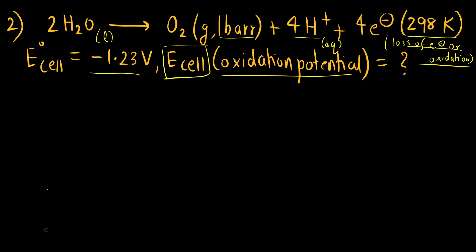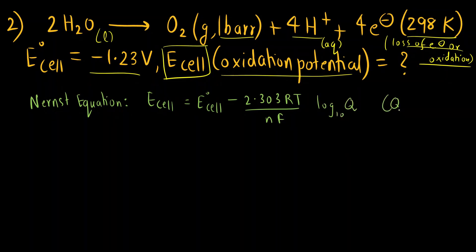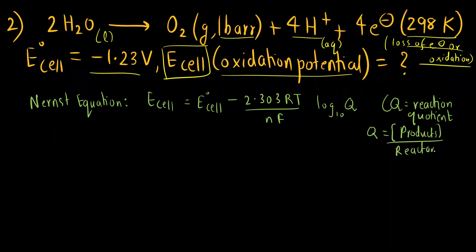The Nernst equation is: E_cell = E°_cell − (2.303RT / NF) × log Q, where Q is the reaction quotient, which is the concentration of products divided by concentration of reactants. One more data was given: pH = 7.